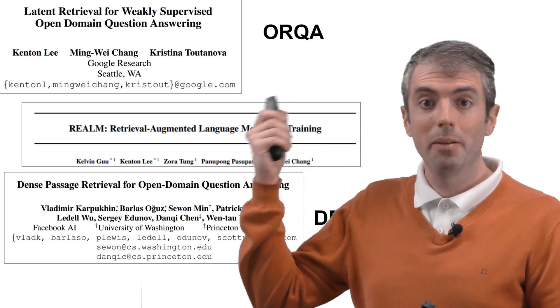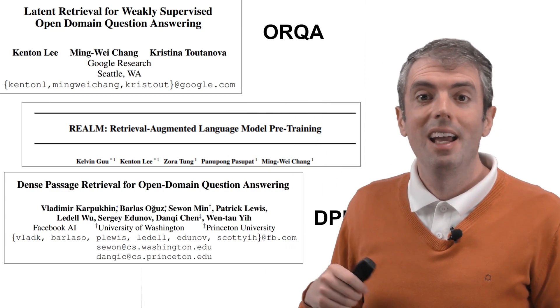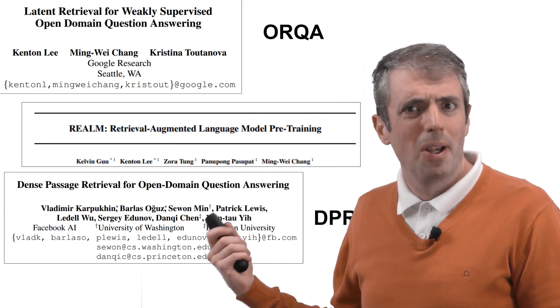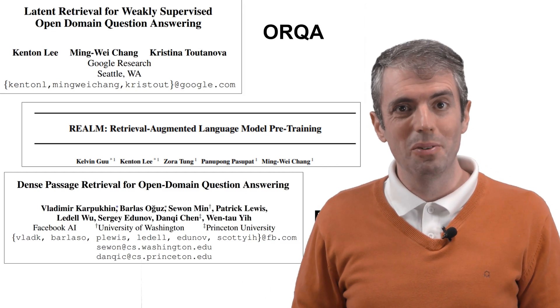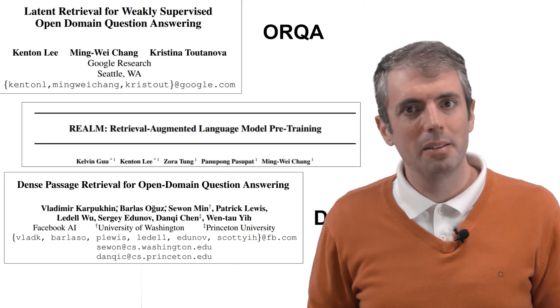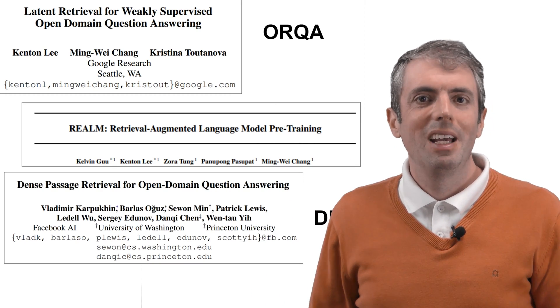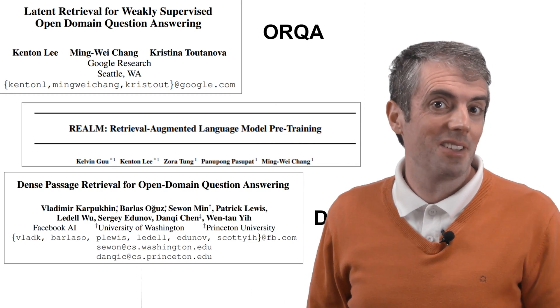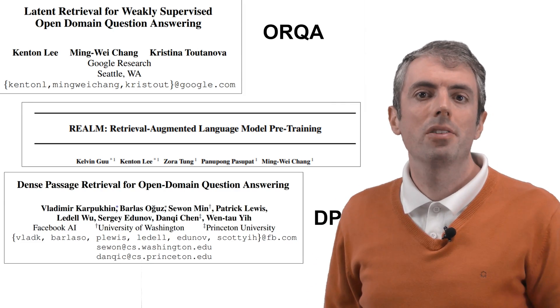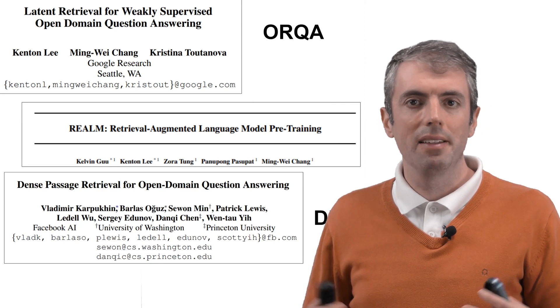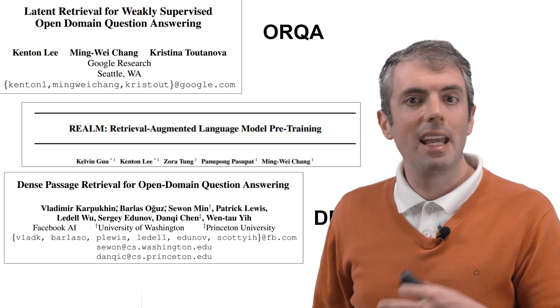But ORCA and REALM came out a little bit first. So I'm going to talk primarily about those since many of the innovations were there. So what do these papers say? ORCA showed that it was possible to do neural retrieval better than off-the-shelf IR. Realm improved the pre-training, doing masking of spans that are likely to be the answer.